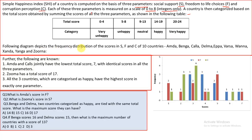The following diagram depicts the frequency distribution of the scores S, F, C of 10 countries — Amda, Benga, Kala and all 10. This is the frequency diagram. For F, denoted by maroon color: the number of countries who scored 1 is 2, scored 2 is 1, scored 3 is 2, and so on. That is the understanding of this frequency graph.